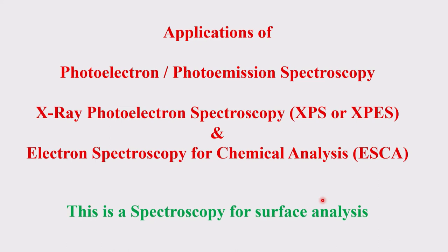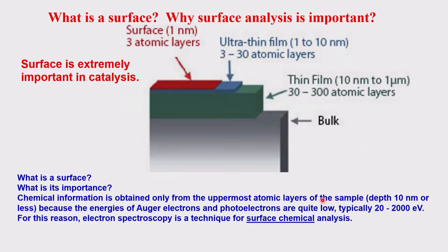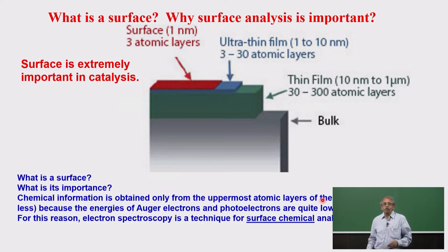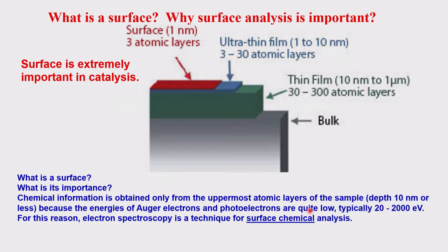This particular technique is something to do with the surface and you are going to analyze the surface part of it. Which means it is very important in catalysis — heterogeneous catalysts, where the catalyst surface is important. This is a technique which will tell you what is present at the surface: whether the surface is active or has some passivation — everything can be identified.